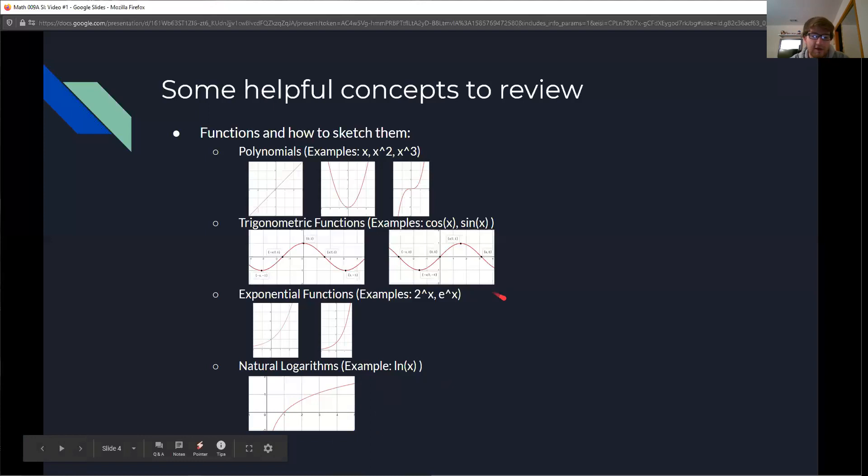So what that means is if we have a composition like e to the natural log of x, we have that the exponent e and natural log cancel out and we're just left with x. Same in reverse. So if you have natural log of e to the x, we're just going to have x left over.